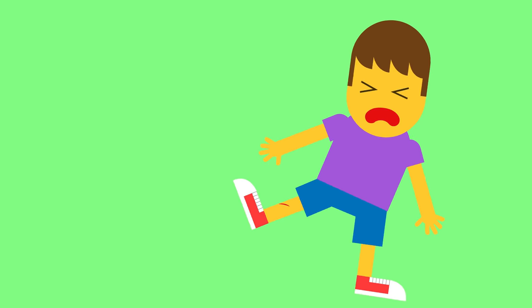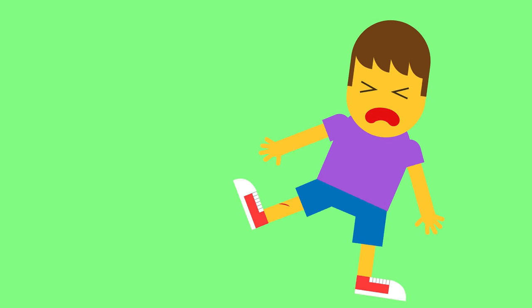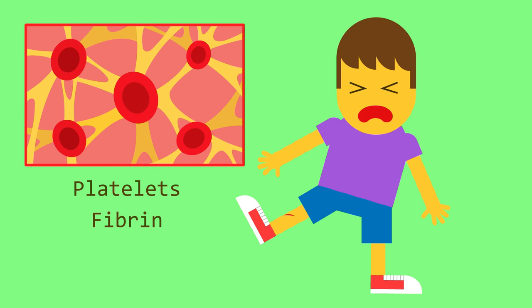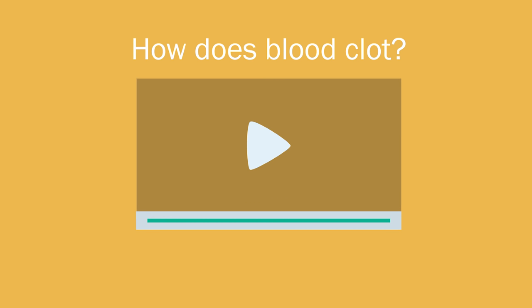Fall over and cut yourself? Luckily our blood has its own defense mechanisms, preventing the wound from becoming infected. The blood contains platelets and fibrin, which cause the blood to clot and form a scab. You can learn more about this in our video on blood clotting.